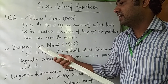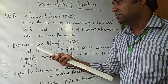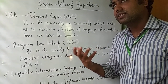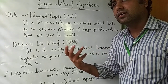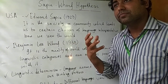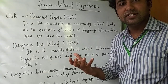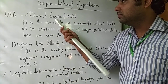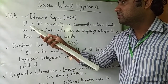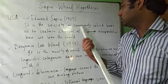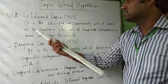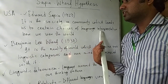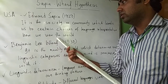Edward Sapir and Benjamin Lee Whorf believed that when we process language in our real life, it has some sort of influence in our language learning and application. Sapir believes it is the society or community which leads us to certain choices of language, interpretation, and how we view the world.